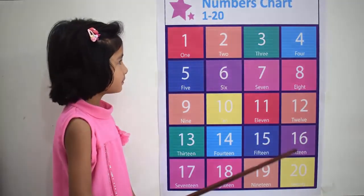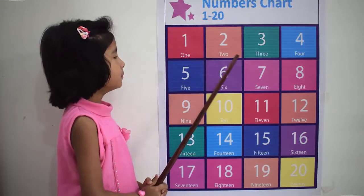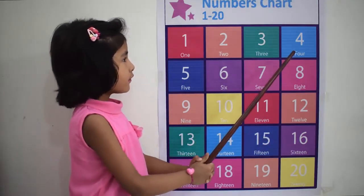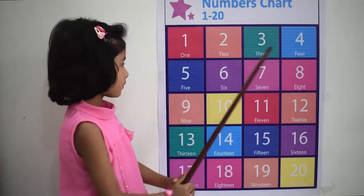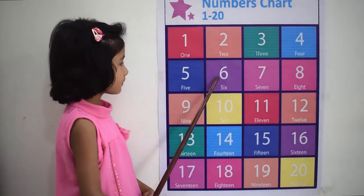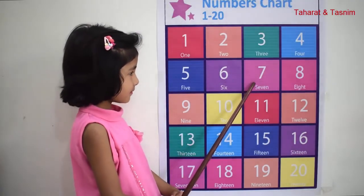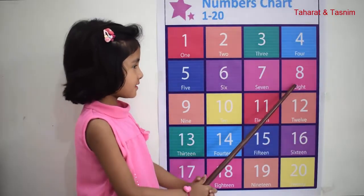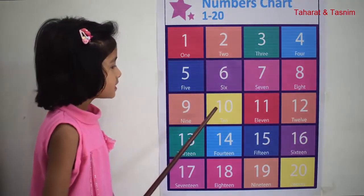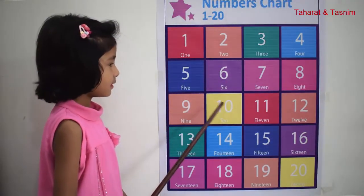One, two, three, four, five, six, seven, eight, nine, ten, eleven.